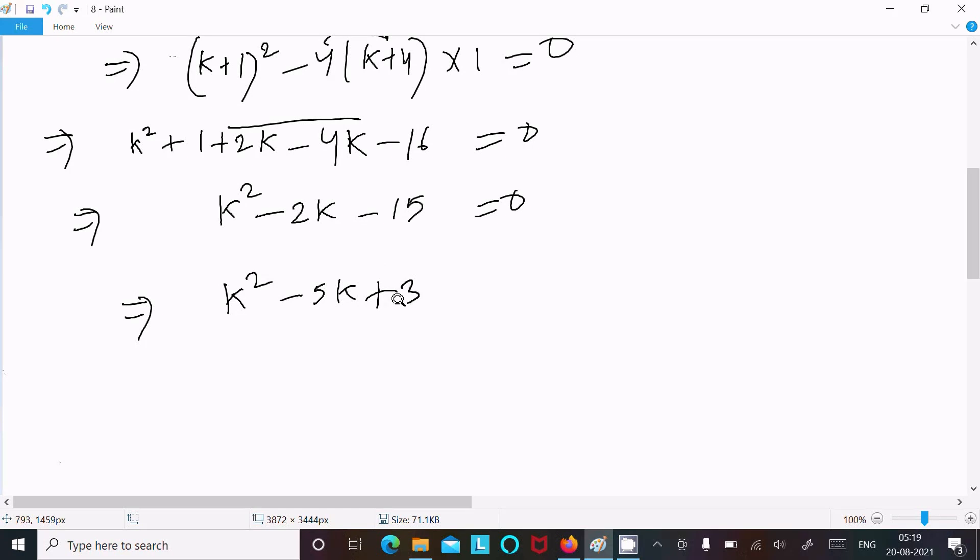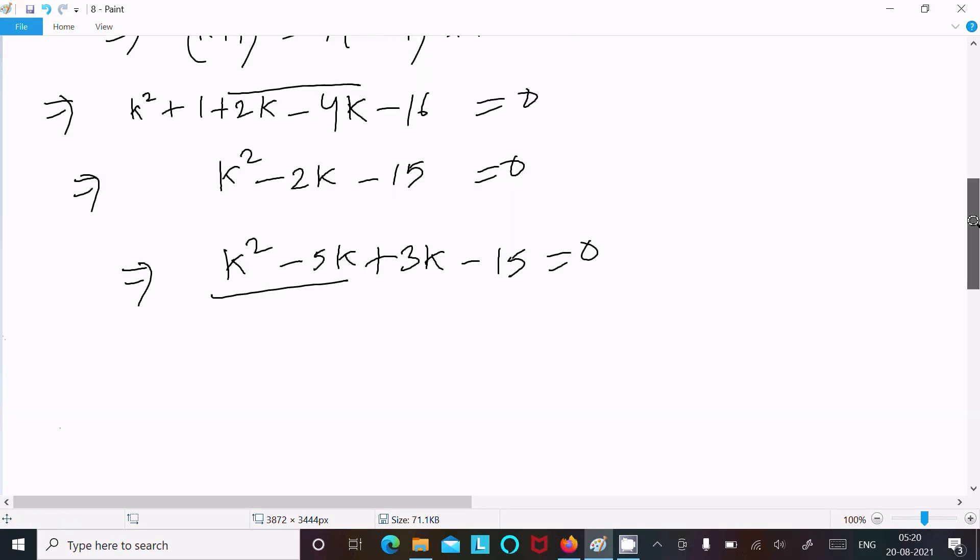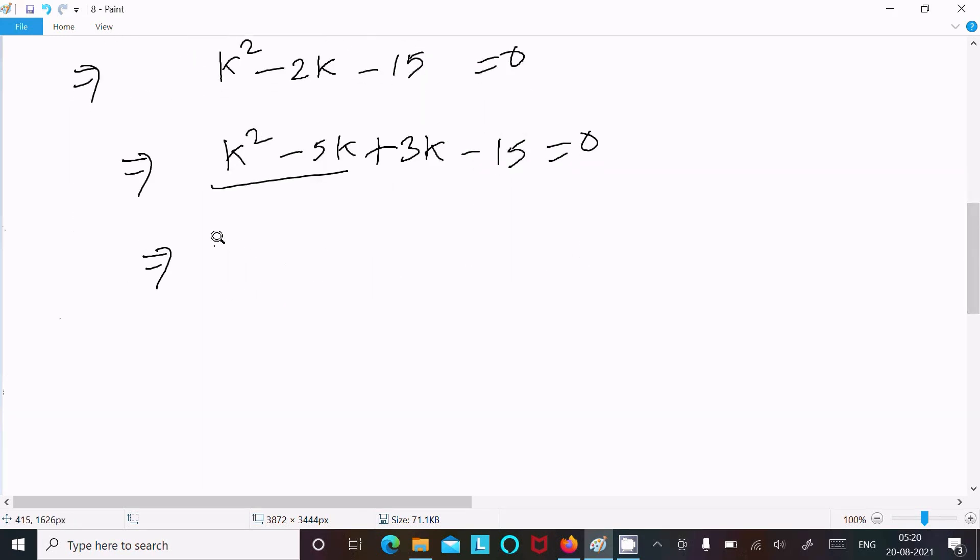Now here we can write k² - 5k + 3k - 15 = 0. Now let's take the common factors.